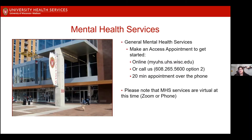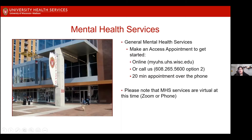You can get an access appointment online by signing into your MyUHS portal, where you'll see a list of provider names and their availability to sign up. The other option is calling the front desk at 608-265-5600, option two, and saying you're looking for an access appointment. All services are currently virtual, and access appointments are done over the phone.